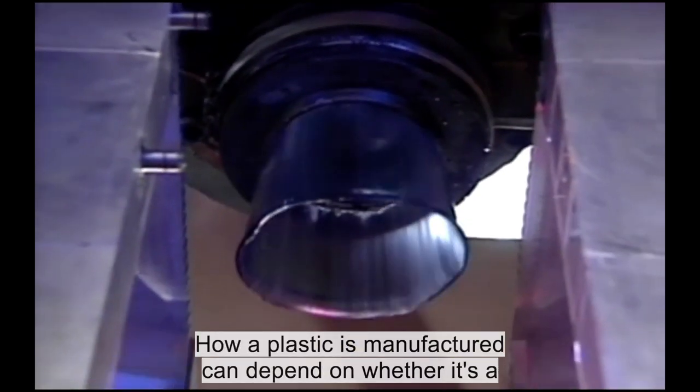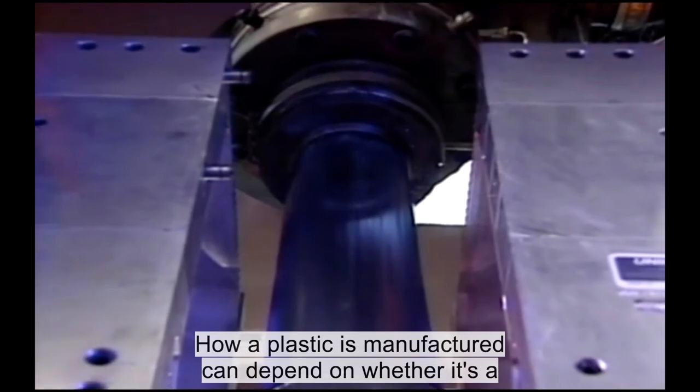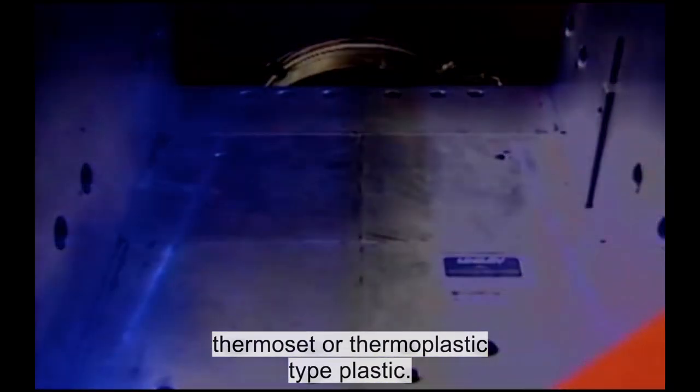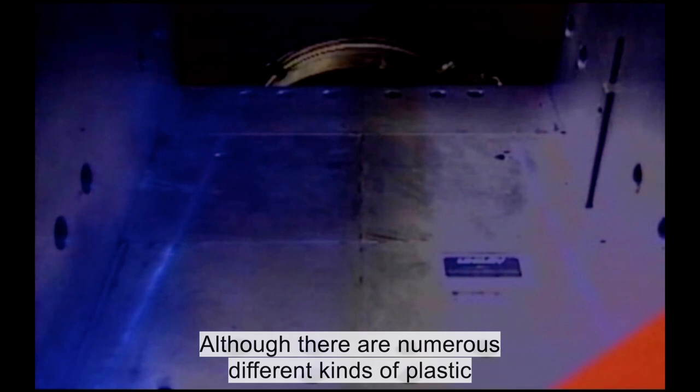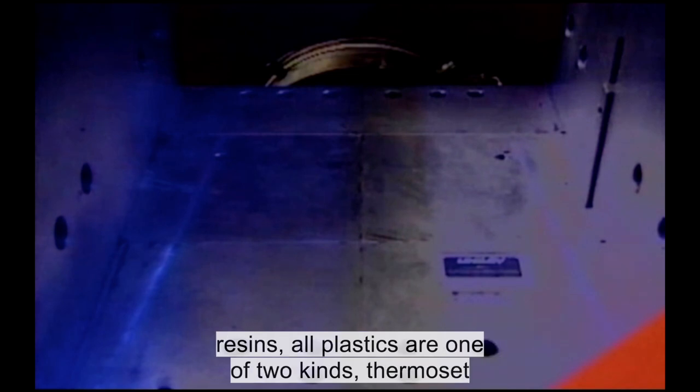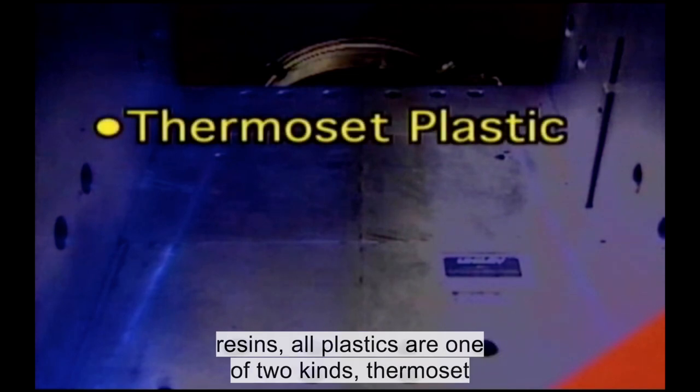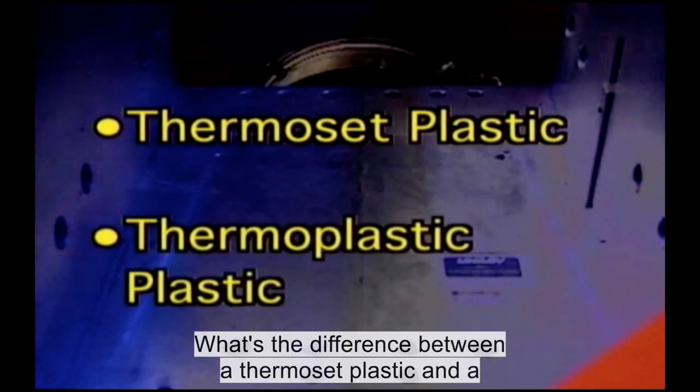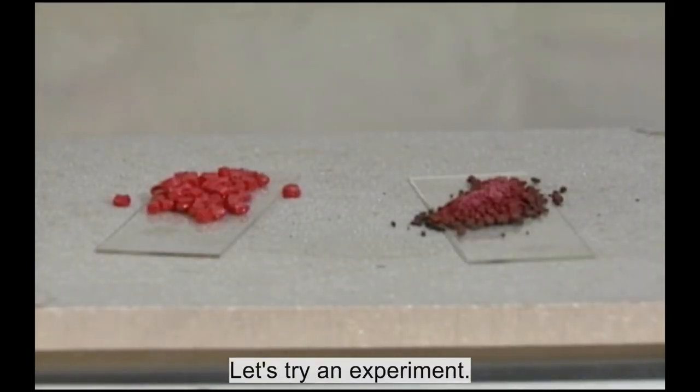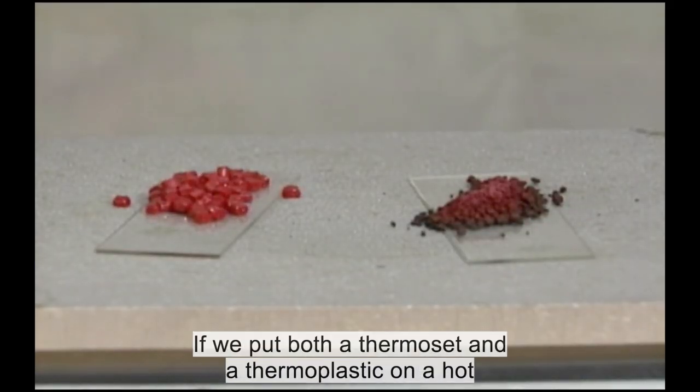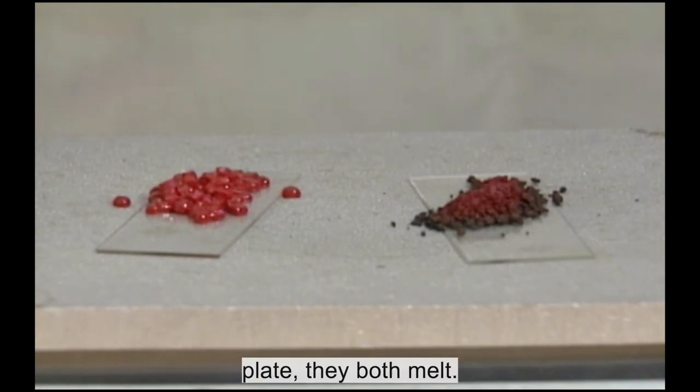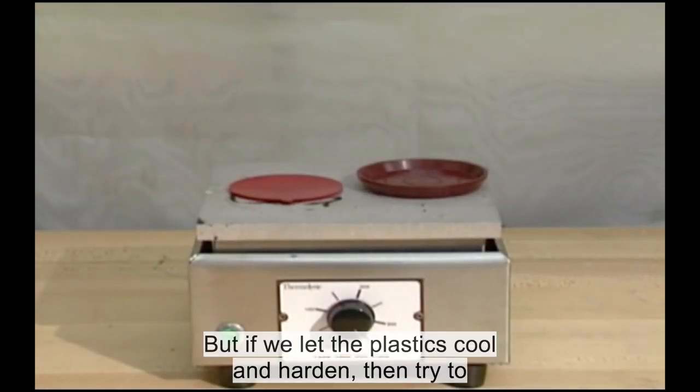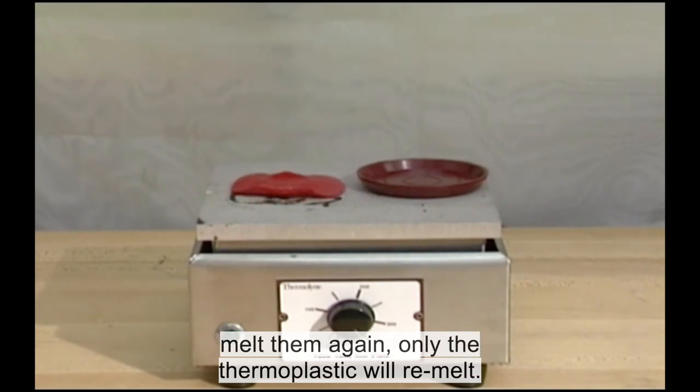How a plastic is manufactured can depend on whether it's a thermoset or thermoplastic type plastic. Although there are numerous different kinds of plastic resins, all plastics are one of two kinds: thermoset plastic or thermoplastic plastic. What's the difference? Let's try an experiment. If we put both a thermoset and a thermoplastic on a hot plate, they both melt. But if we let the plastics cool and harden, then try to melt them again, only the thermoplastic will remelt.